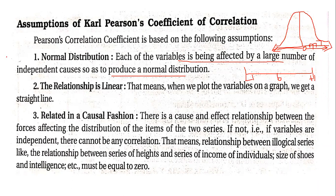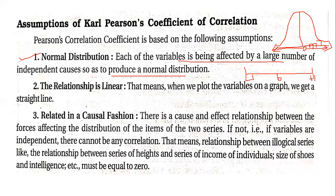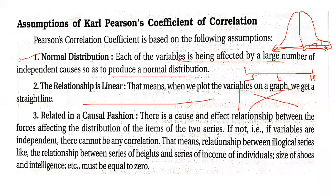That is the first assumption made by Karl Pearson. The second assumption is that the relationship is linear, which means if you plot all the x and y values on a graph, you will get a straight line — whether standing, tilted, or otherwise.